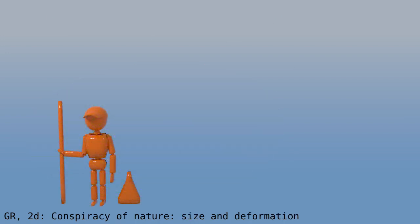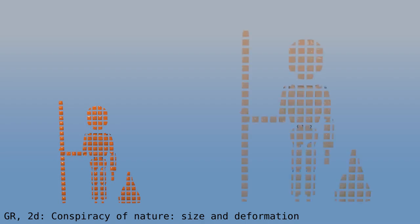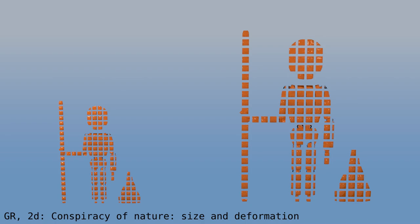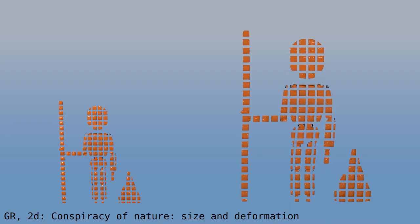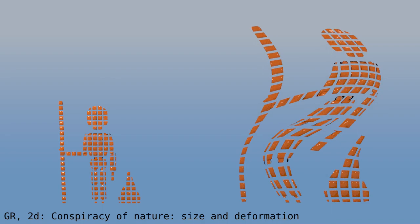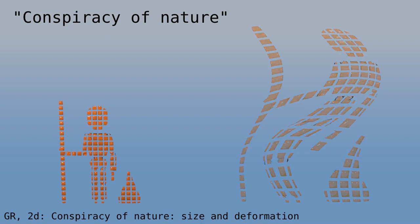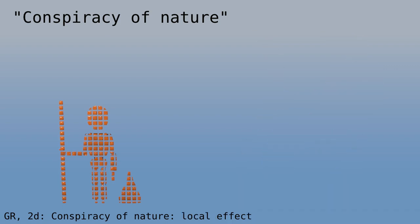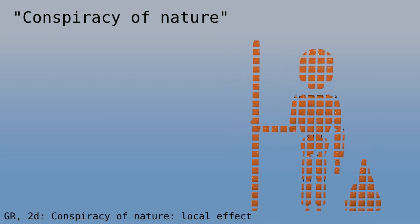There is an old riddle. If everything doubles in size, including you, would you notice? Well, no, you wouldn't. You double in size, your measuring stick doubles in size, and the things you measure double in size. What we have is something similar. If you deform, and your stick deforms, and the things you measure deform, you will not notice. This is a kind of conspiracy of nature, similar to what we saw in the video on special relativity. And if things change in size as you move from one region of space to another, you would not notice anything locally. You might notice if you compare things far apart. For example, by making a large square, as we saw before. But locally, where you are, you will not notice.